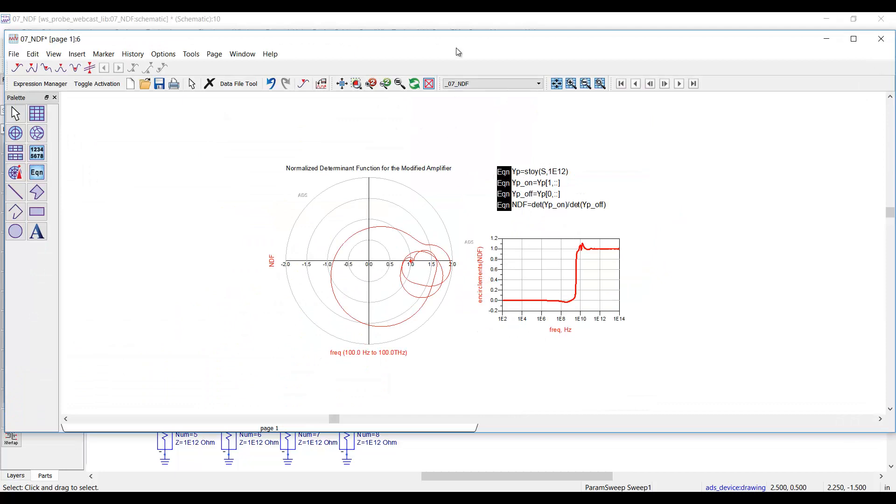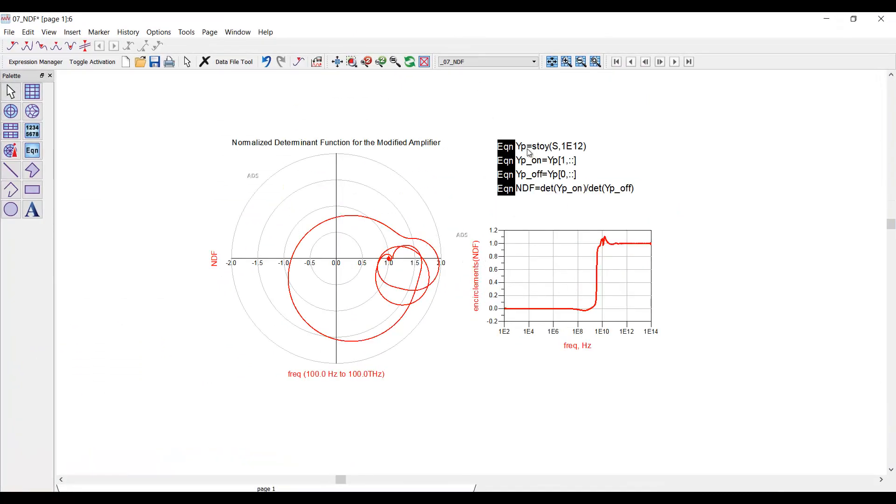In the data display, the eight port S matrix is converted to Y parameters, and then I take the determinant with the source on and off to derive NDF. Similar to return ratio, the next step is to look for encirclements, and this new circuit is deemed unstable by virtue of this NDF function. This is rigorous analysis extended to multiple devices.